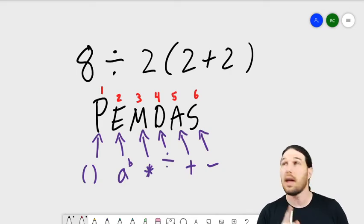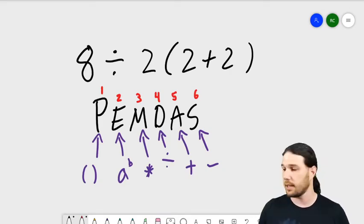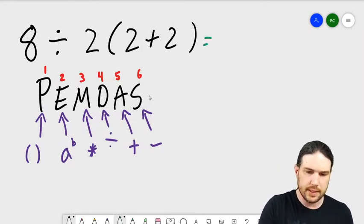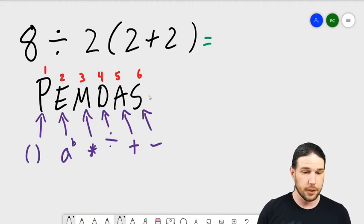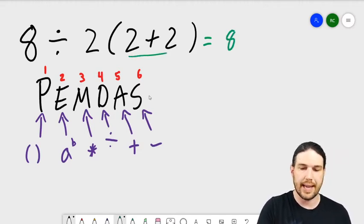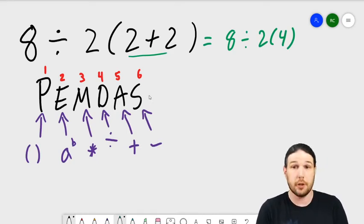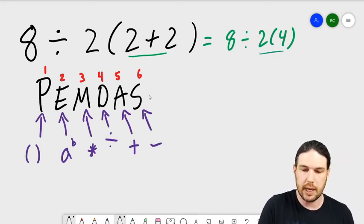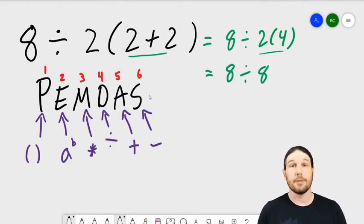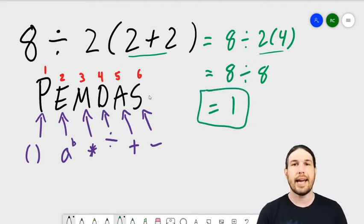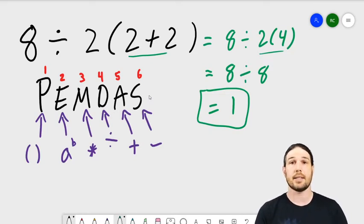And if we use this method of PEMDAS, let's see what we get. So I'm going to scooch this over a bit, and we will say that this is equal to, we would do the parentheses first, right? So 2 plus 2 is 4. So we get 8 divided by 2 times 4. And then because next third is multiplication, we do the multiplication, 2 times 4. So we get 8 divided by 8. And of course, 8 divided by 8 is 1. And that is the answer that we would get if we take PEMDAS literally as written.